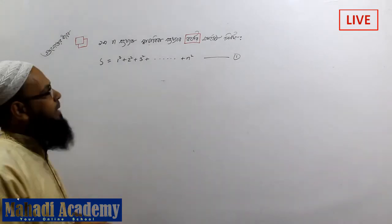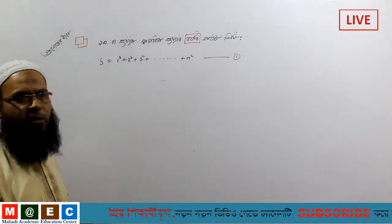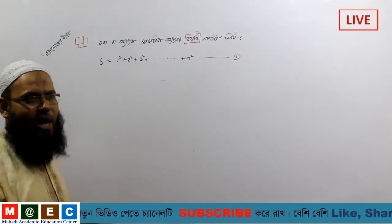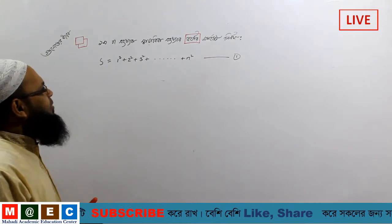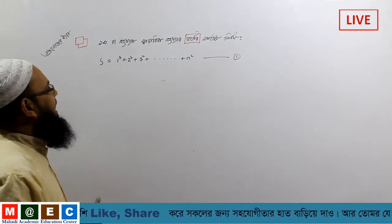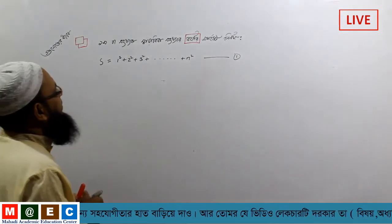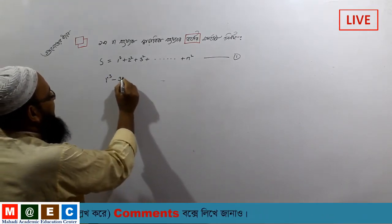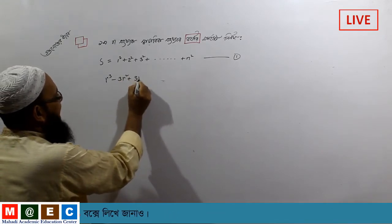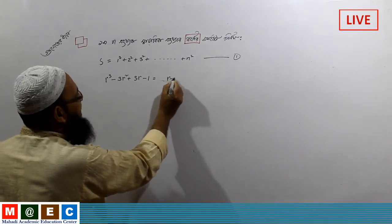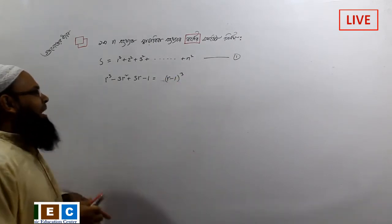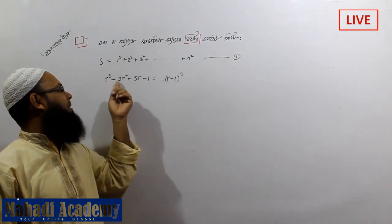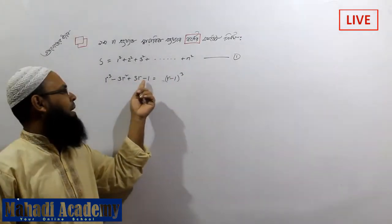The way we all make this mistake: minus 3r squared plus 3r minus 1 equals r minus 1 whole cube. So I am going to write a minus b whole cube equal to a cubed minus 3a squared b plus 3ab squared minus b cubed.